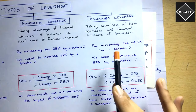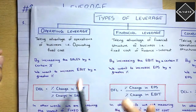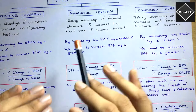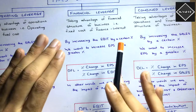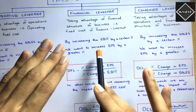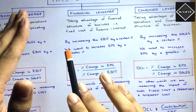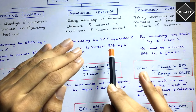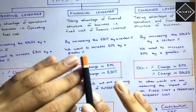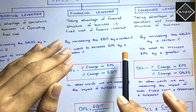Combined leverage shows the overall risk of the business, because it takes into consideration both operations and financial structure. Financial leverage shows financial risk, and operating leverage shows business risk. If financial leverage is more, it means the business has more finance cost — more interest to pay, more borrowings. They have to generate more and more revenue to cover that interest; if they can't, they will go bankrupt.